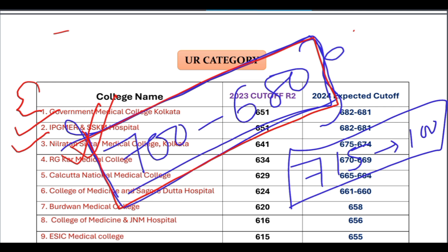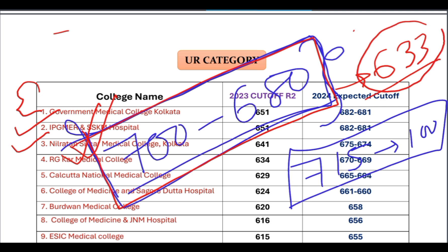The study shows that for students around the borderline and other states, those scoring more than 633 to 634 may still get into government medical colleges. Students with more than 633 marks from other states have options, though less than top AIIMS candidates.